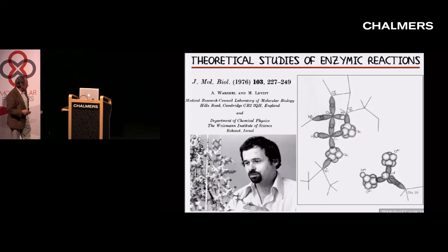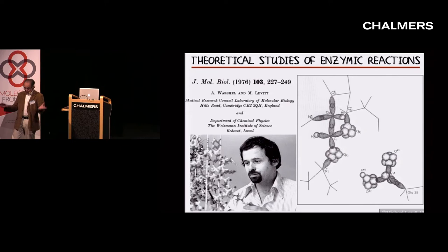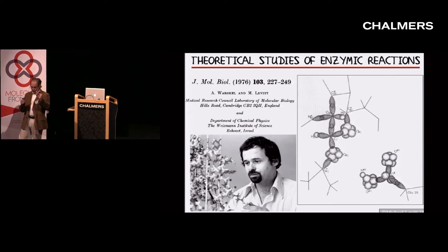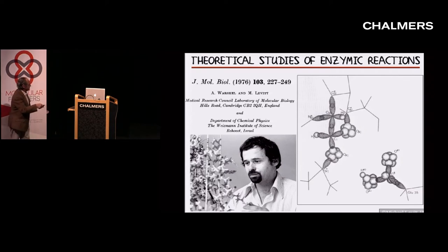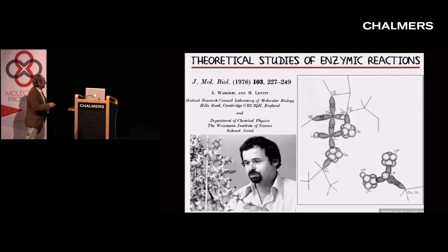Another thing that Aria did with me was to go in the other direction. Instead of simplifying things by throwing away atoms, you make things more complicated by taking a few atoms and putting quantum mechanical electron orbitals on them. So suddenly, half a dozen atoms become as complicated as the whole system. By carefully choosing the atoms and worrying about how they interact with the rest of the system, one can treat part of the system quantum mechanically and part classically.